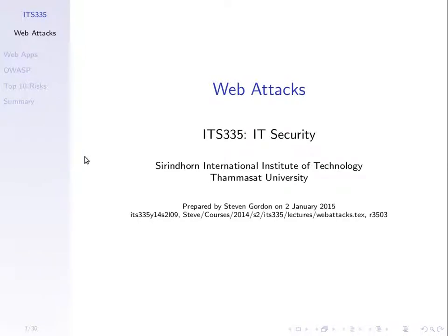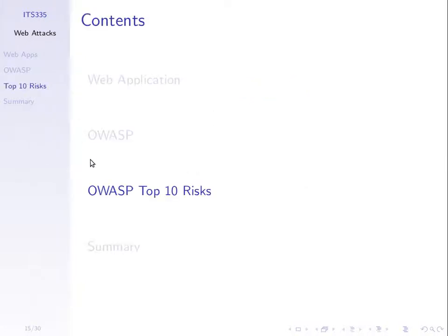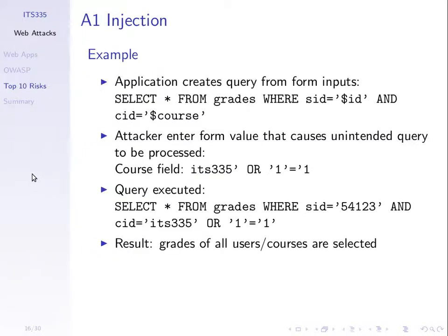We're looking at the top 10 risks for web applications as denoted by OWASP. In the previous lecture we looked at some simple risks, but today we'll try and demonstrate some of the more complex ones. The first one we'll try is called injection, or specifically regarding an SQL-based website, SQL injection.